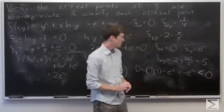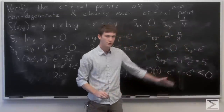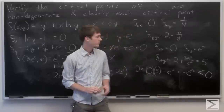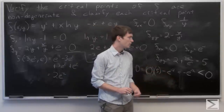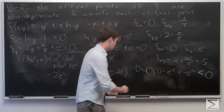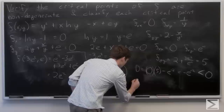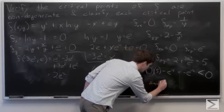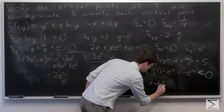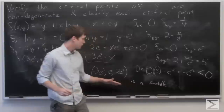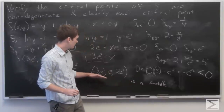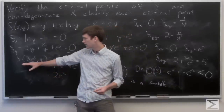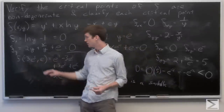Since the determinant is non-zero, we know that our critical point is non-degenerate. And since it's less than zero, we know that the critical point is a saddle. So f has a saddle point at (x, y) equals (negative 3e squared, e).